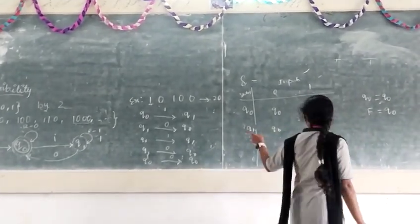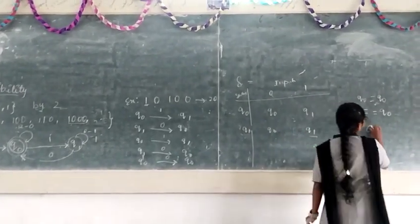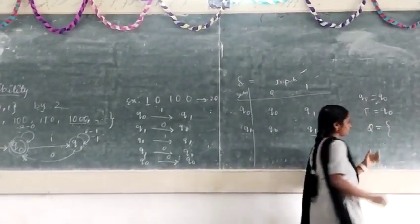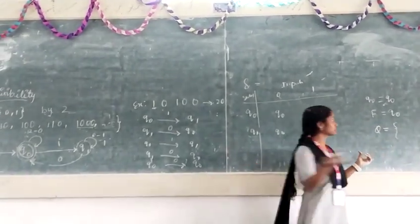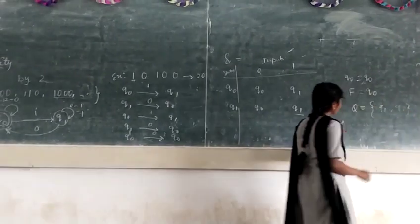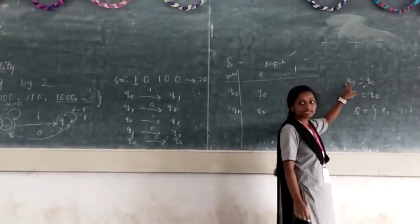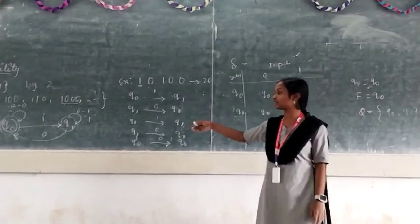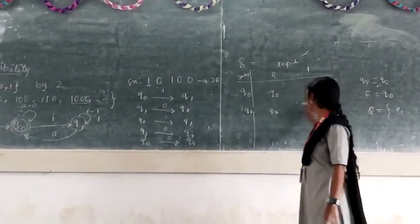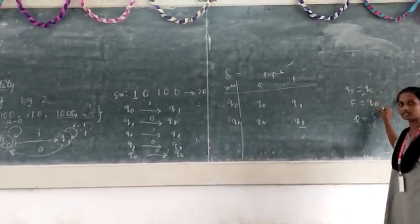We have completed the transition diagram and set of states is two. Set of states means in our DFA there are two states, Q0 and Q1. Delta means the transition diagram. Q0 is the initial state and the initial state and the final state is same. So Q0 equals to Q0 and this is initial state and the final state equals to Q0.